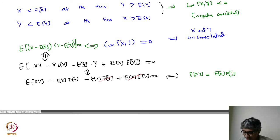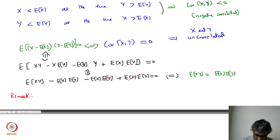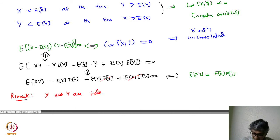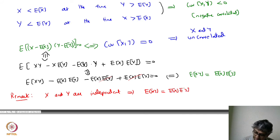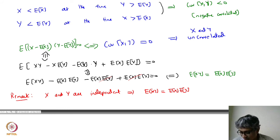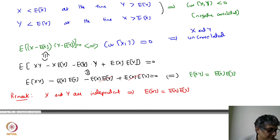We have seen this expression before. We have shown that if X and Y are independent, then E of XY equals E of X times E of Y. The converse is not true — the converse is just saying that if E of XY equals E of X times E of Y, then random variables are uncorrelated. That's something we should keep in mind.